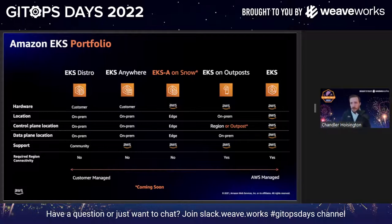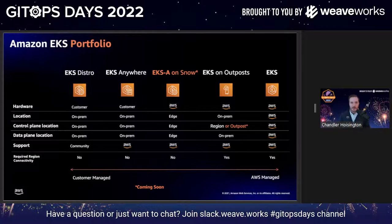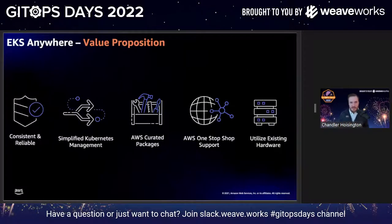Underlying all of these offerings is our EKS Distro. EKS Anywhere and EKS Distro are both open source products you can check out on GitHub. Underlying all these Kubernetes products is a consistent set of builds based on upstream Kubernetes — it's in no way a fork, but we do apply some patches and do our own supply chain security, publishing to our container registry. That's what EKS Distro is, and it underpins all of the Kubernetes offerings at AWS.